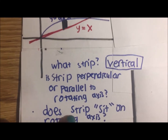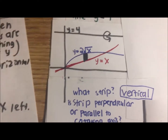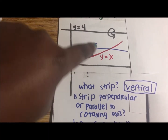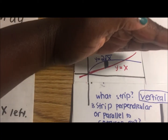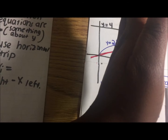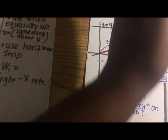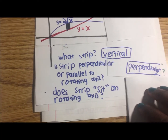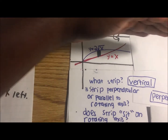The strip is vertical. The rotating axis y equals 4 is horizontal. The strip goes vertically, so it is perpendicular to the rotating axis.